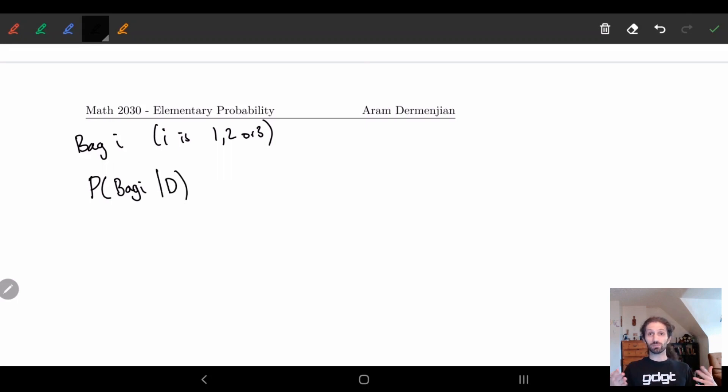We know this mathematically how to write this down. We already have the language, we just have to write it. This we actually know what the formula for this is. This is just the probability that bag I intersect the dark chocolate is equal to the probability of dark chocolate.